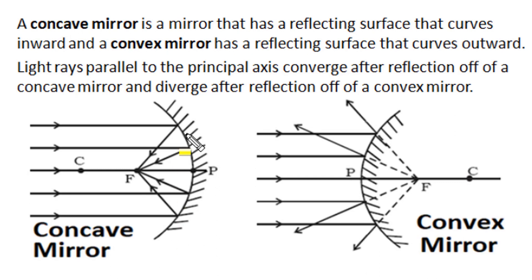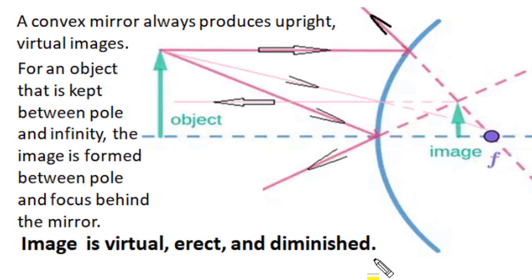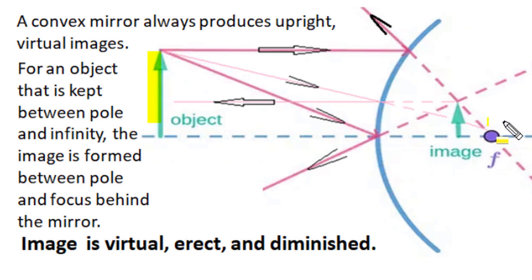A concave mirror is a spherical mirror which has a reflecting surface curved inward — it's a converging mirror. Rays coming from infinity parallel to the principal axis converge at the principal focus. A convex mirror has a reflecting surface that curves outward and is a diverging spherical mirror; rays coming parallel to the principal axis after reflection diverge in different directions, appearing to come from the principal focus behind the mirror.